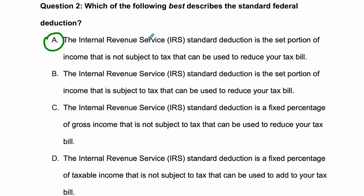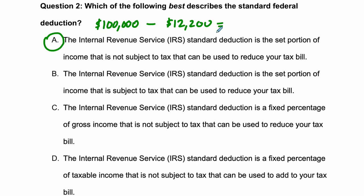There is a deduction — an amount of money you can subtract from your income that is not subject to tax. The standard deduction right now is about $12,200. Let's say you earn $100,000 — that's your gross income, your income before taxes. You're not going to be taxed on the full $100,000. You first take a deduction, a tax-free amount. So that leaves $87,800, and this number is your taxable income. The difference between your gross income and your taxable income is that standard deduction.